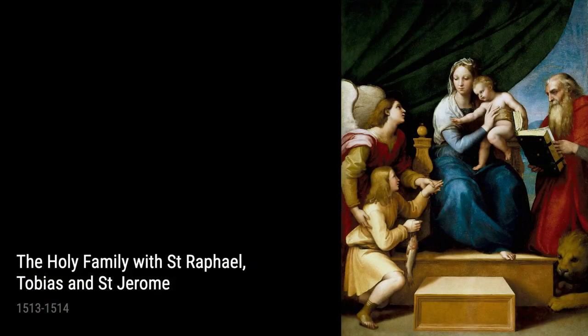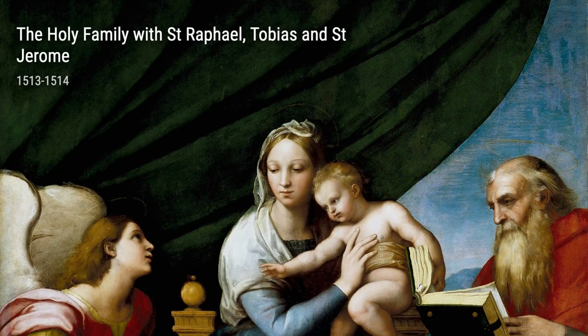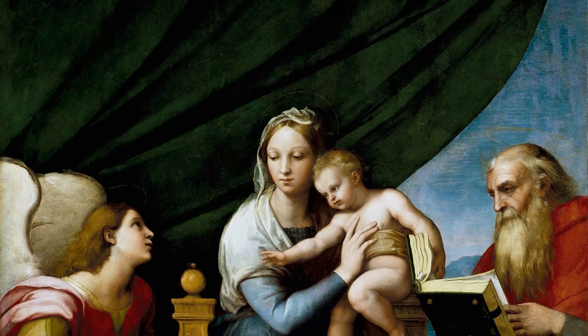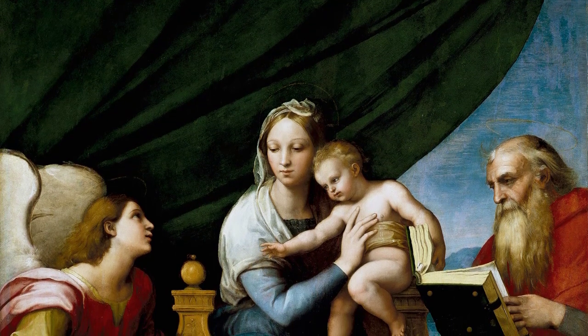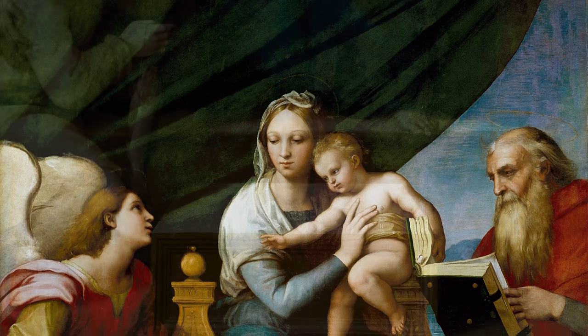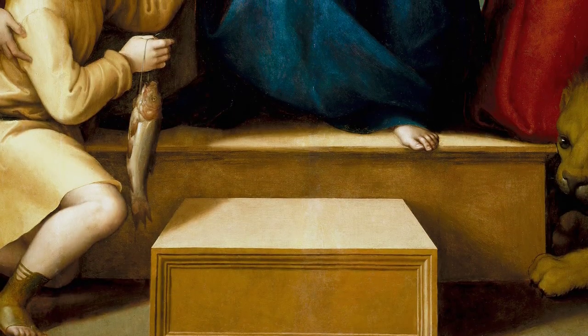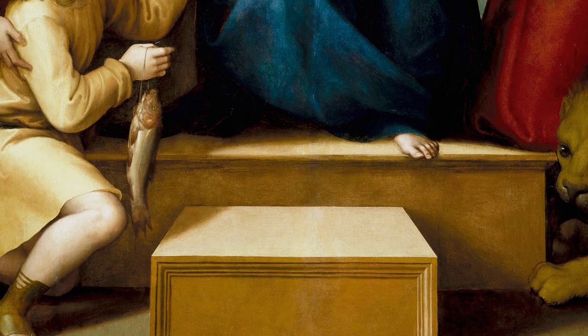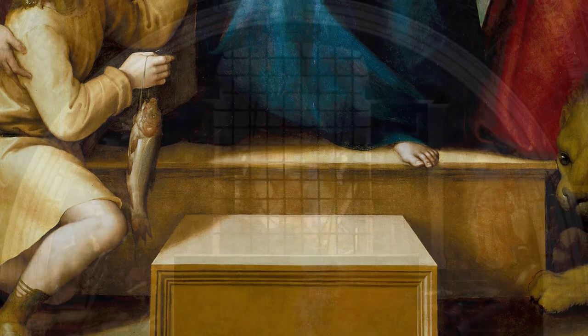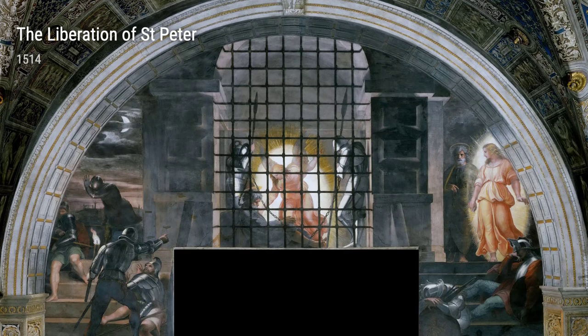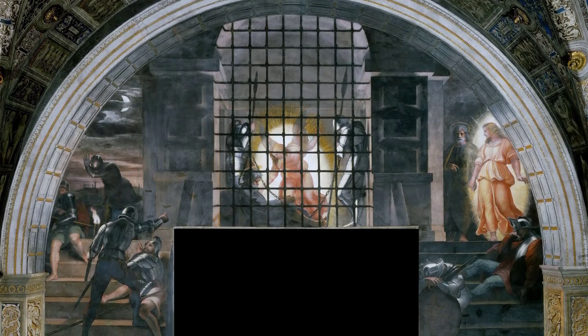Raphael's talent was not limited to religious scenes, as he also excelled in portraiture. Take, for example, his famous portrait of Baldassare Castiglione, capturing the essence and personality of his subject with a remarkable level of realism. During his time in Rome, Raphael had the honor of painting several portraits of Pope Julius II, the most notable being the iconic portrait of Pope Julius II. This work portrays the Pope as a powerful and authoritative figure, embodying the spirit of the Renaissance period.